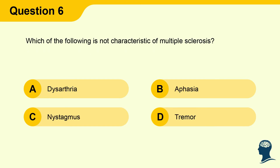Question 6: Which of the following is not characteristic of multiple sclerosis? A) Dysarthria, B) Aphasia, C) Nystagmus, D) Tremor.